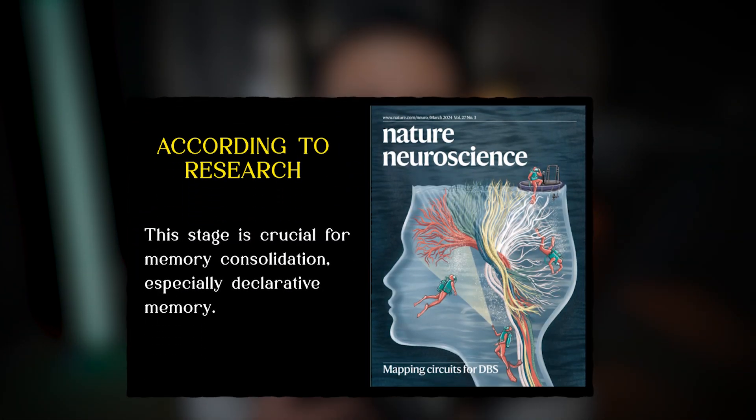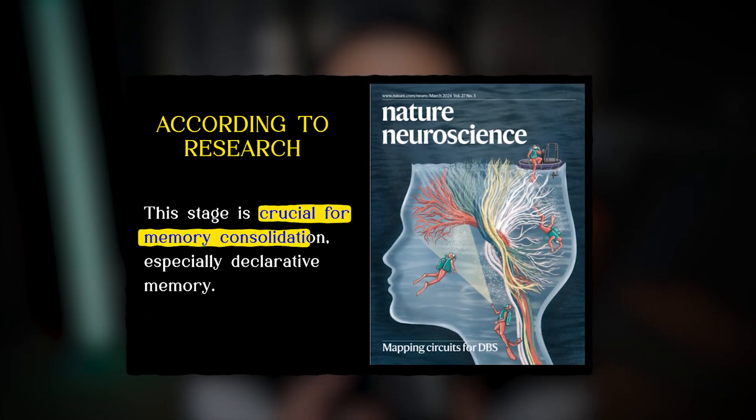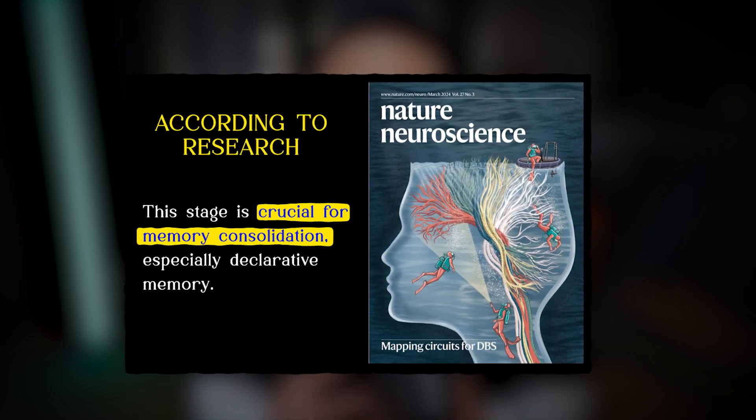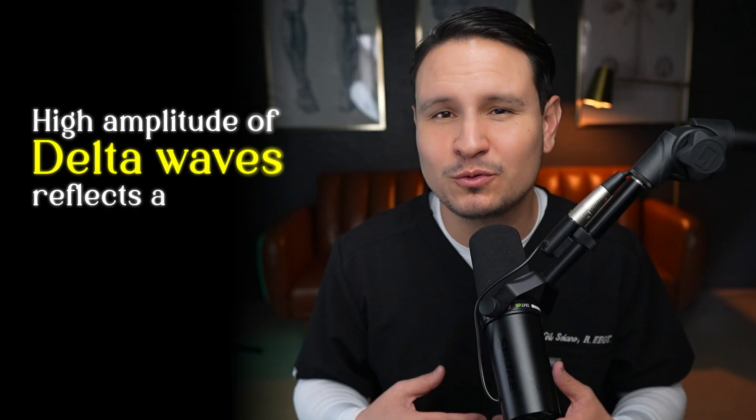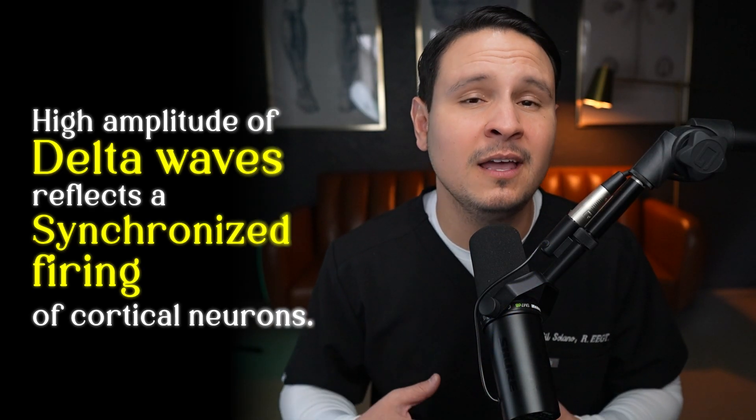N3 is not just a passive state — it plays an essential role in the body's restorative processes. According to research published in Nature Neuroscience, this stage is crucial for memory consolidation, especially declarative memory. It also supports physical restoration, such as tissue repair and growth, and boosts immune system function. The high amplitude of delta waves reflects a synchronized firing of cortical neurons, which is believed to promote these regenerative activities.